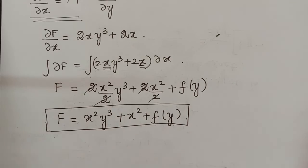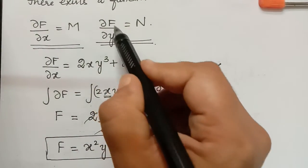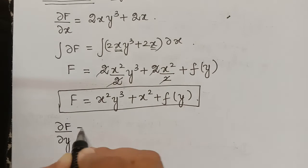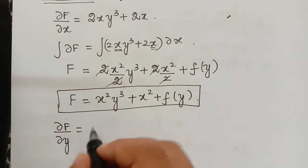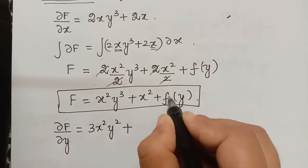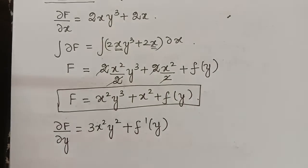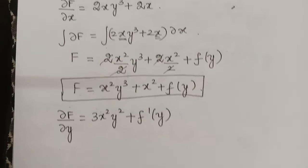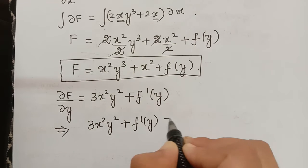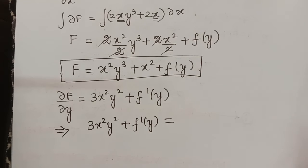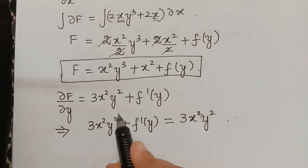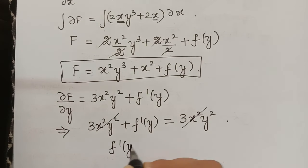To find f(y), we use ∂f/∂y = N. Differentiating f = x²y³ + x² + f(y) partially with respect to y gives 3x²y² + f'(y). Setting this equal to N = 3x²y², the 3x²y² terms cancel, and we observe that f'(y) = 0.